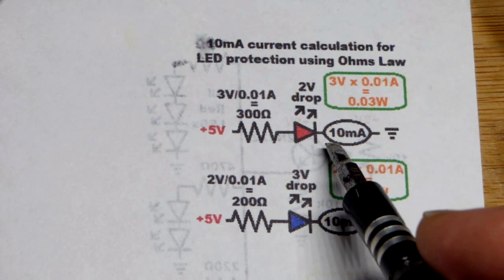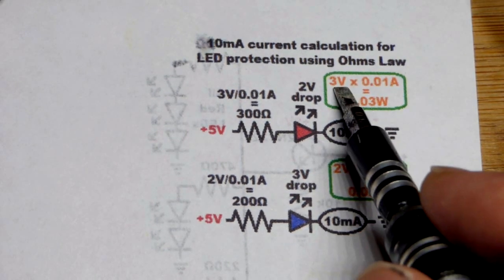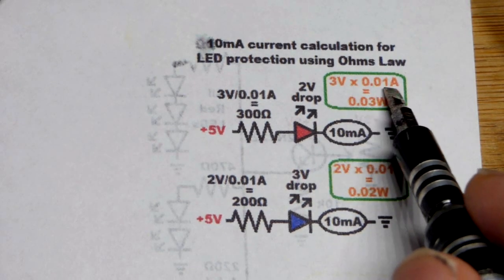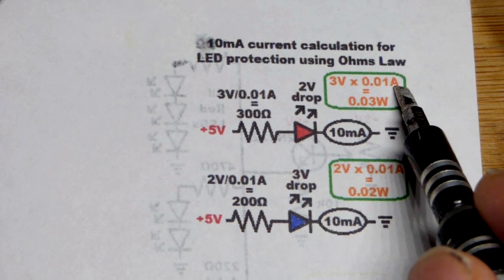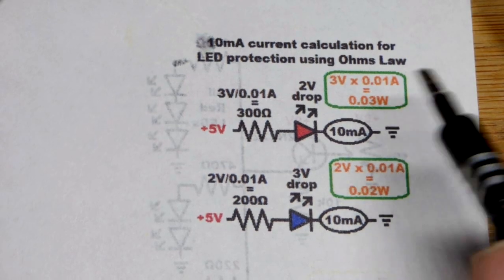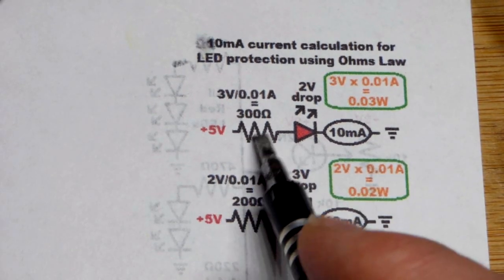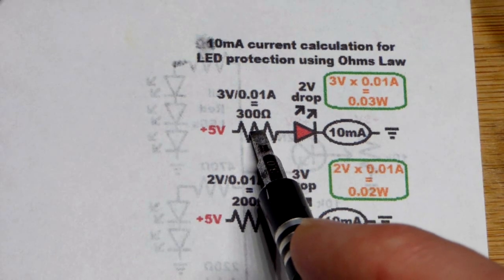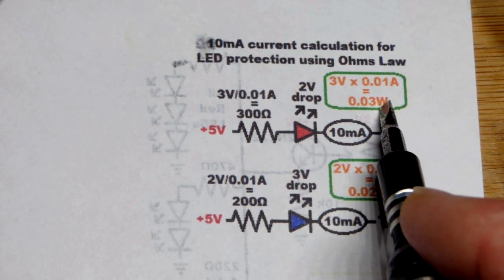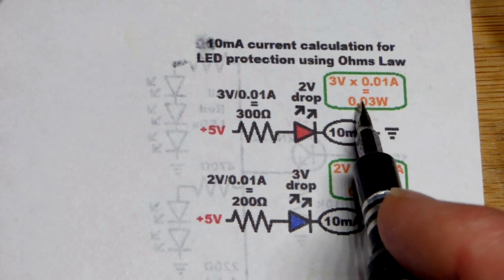So we got for the resistor here 3 volts times 0.01 amps. That's how you figure out how warm it's going to get, that's the wattage, 0.03 watts. Most resistors that you get in kits, the most common size is 0.25 watts, but that's the maximum. You really want to stay below 0.125 and this is well below.